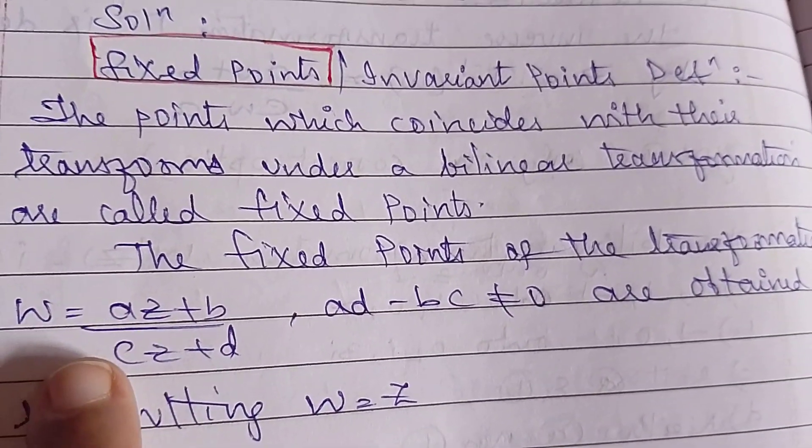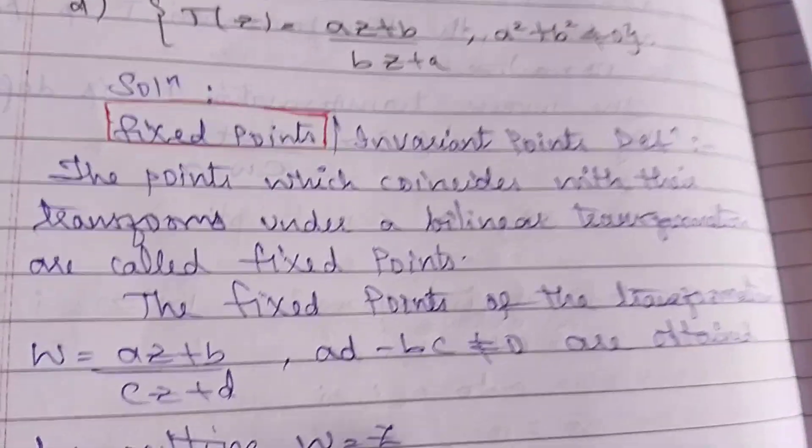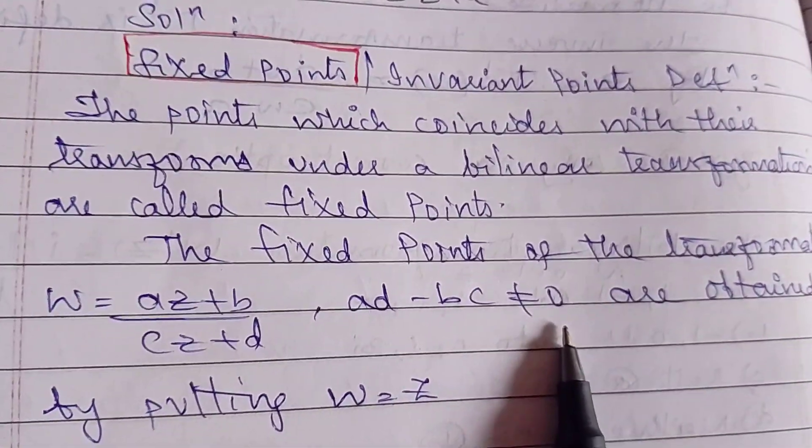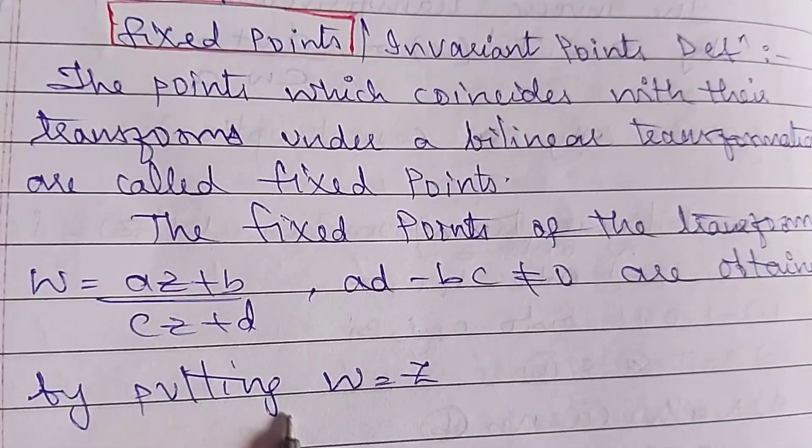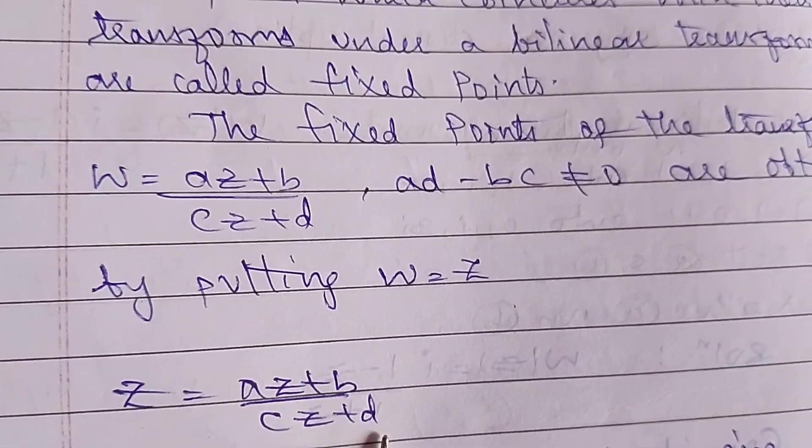If our transform is w = (az + b)/(cz + d), where ad - bc ≠ 0, the fixed point is obtained by putting w = z. So instead of w, we put z and find the value of z. That will give us the fixed points.